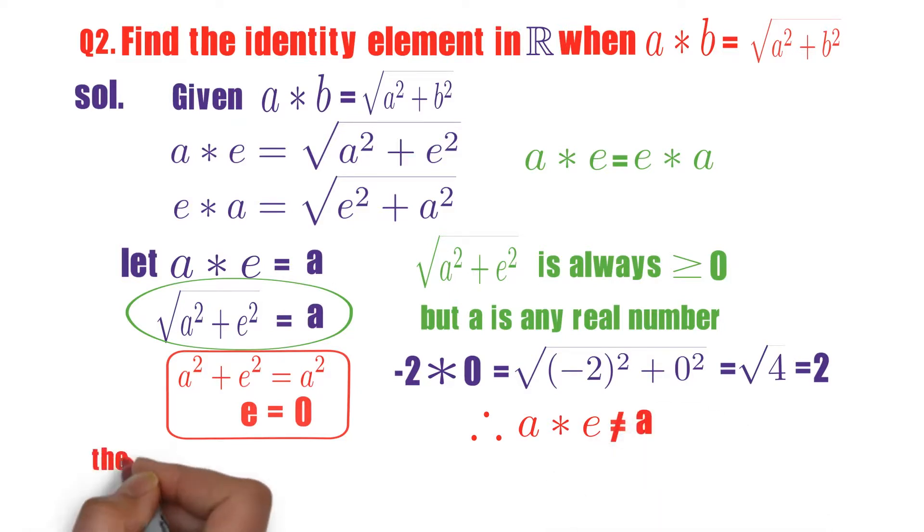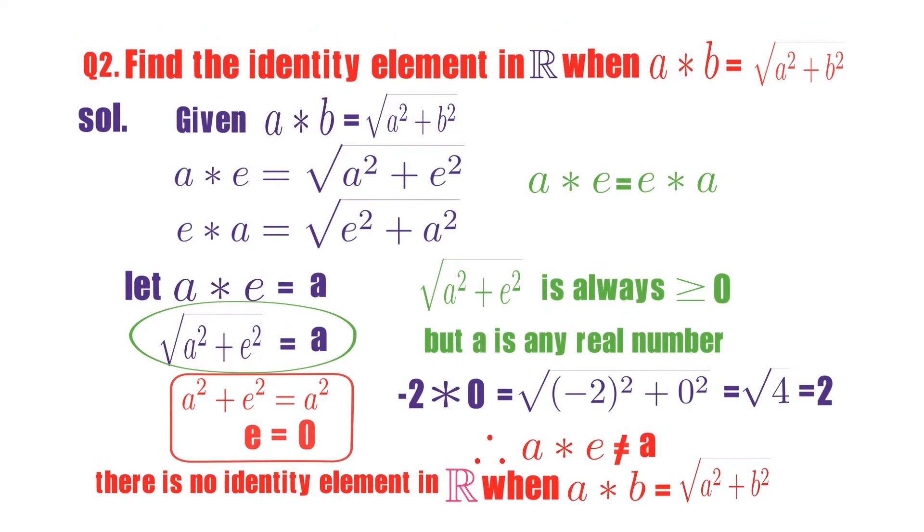So what happens here? It fails in identity property. There is no identity element in set of real numbers when a star b is defined as square root of a square plus b square.